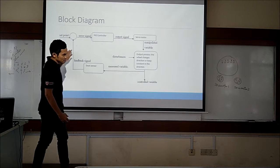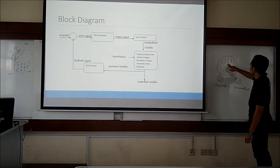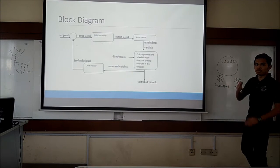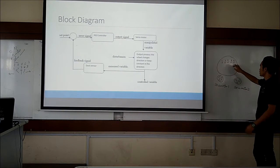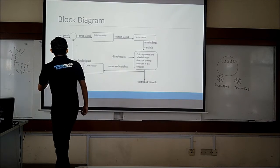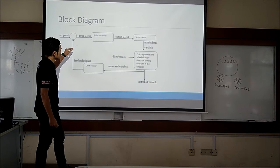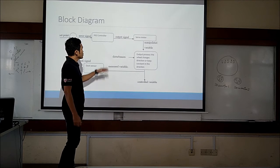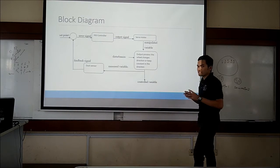These five sensors are actually coordinates. Sensor three detects straight ahead, so the robot will go straight. Sensors one and two correspond to the left direction, and sensors four and five correspond to the right. For example, the set point is sensor three. The error signal is sent to the PID controller, and then the PID controller sends the output signal to the servo motor to move in the correct direction.